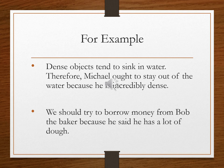We should try to borrow money from Bob the baker because he said he had a lot of dough. In the premise, since Bob is a baker, he probably has a lot of bread dough. We draw the conclusion that we can borrow money from him because we take 'dough' to mean money — like in old-timey slang. But clearly 'dough' is an ambiguous word like 'dense' and 'bank,' so this is another example of the fallacy of equivocation.